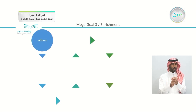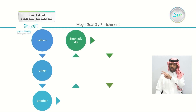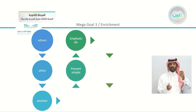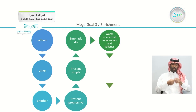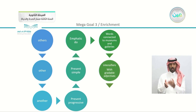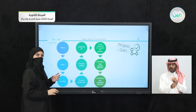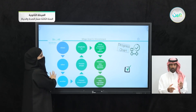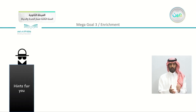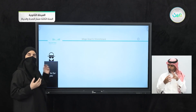We studied the words 'others,' 'other,' and 'another' — the difference between them. We had also emphatic do, the present simple compared with the present progressive, words connected with museums and galleries, and intensifiers with gradable and ungradable adjectives. Note that sometimes there are hints hidden within the sentences that may help you while you do your exercises.